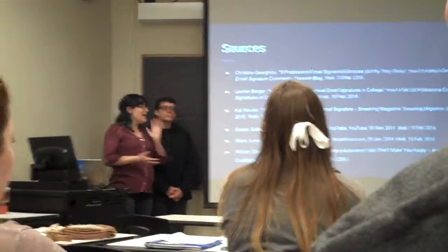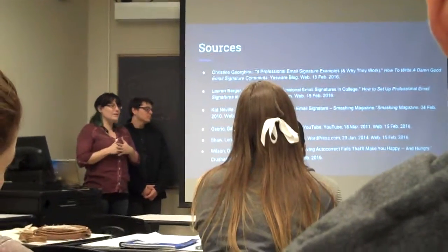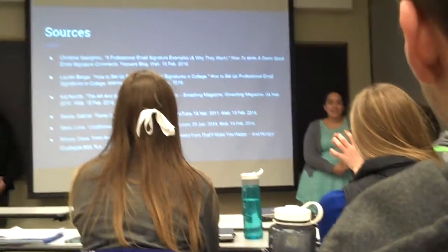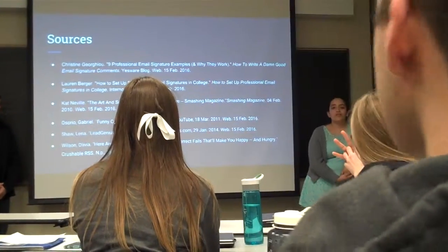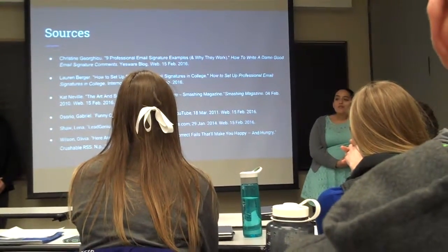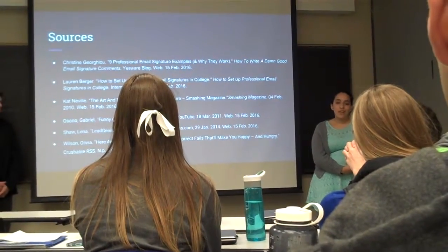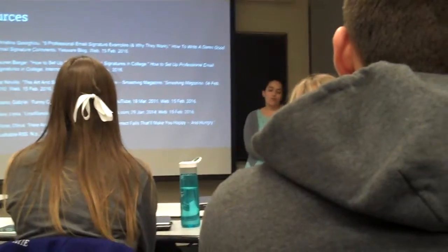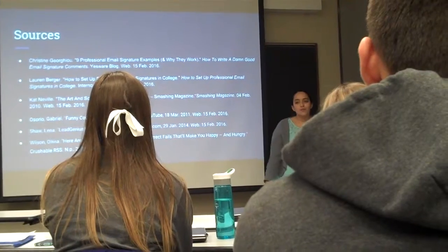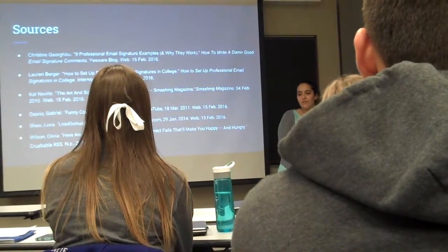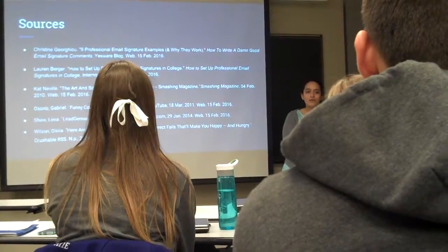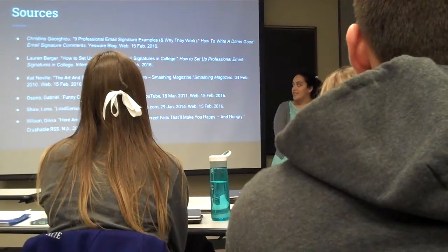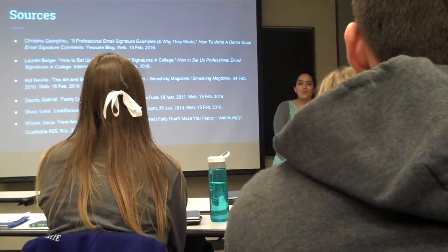Vanessa is going to wrap it up and give a recap of everything we talked about today. Vanessa covered the different domains and providers and how that's a very important choice when choosing an email. Michael talked about attachments and how to attach a file properly so that other people can edit or view it in the most convenient way. Sean shared appropriate signatures in the professional and school world. And Misty talked about some common errors that we will likely encounter at some point in time.